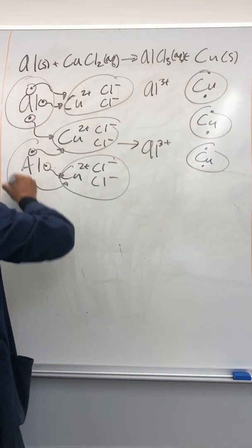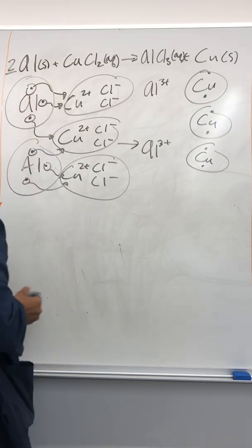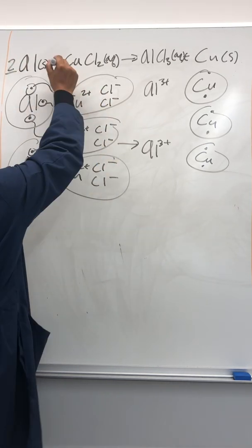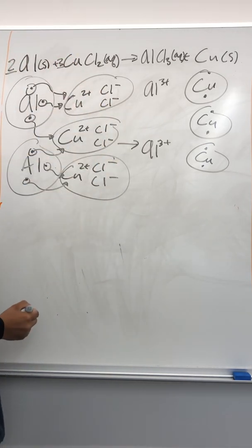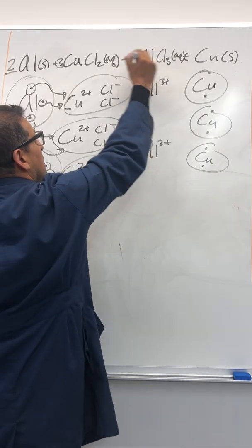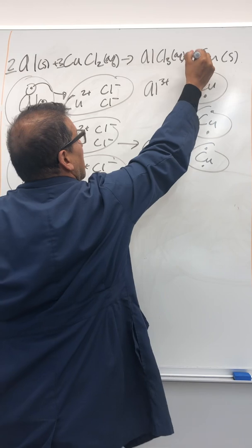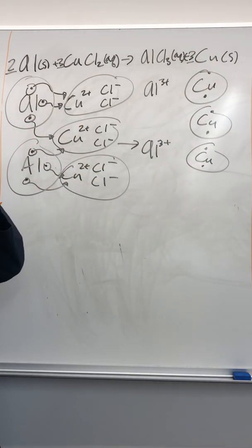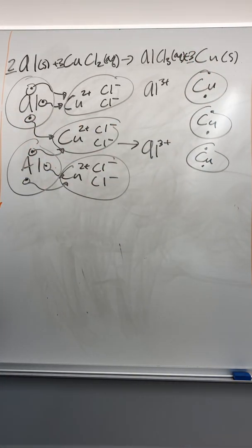So there are two of these aluminums that started out with, okay, react with three of these copper chlorides. Okay. Good. To make, well, let's pause for a second on this one. But for sure we have three of these copper, solid copper atoms. So let's figure out what happened with the chlorides.